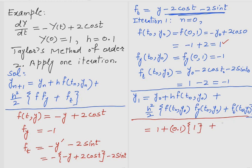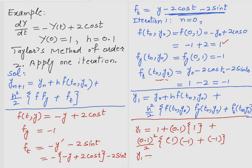Substituting: y_1 = 1 + (0.1)(1) + (0.1²/2)(-1 - 1) = 1 + 0.1 + (0.01/2)(-2) = 1 + 0.1 - 0.01 = 1.09. For further iterations, repeat the same procedure with n=1.